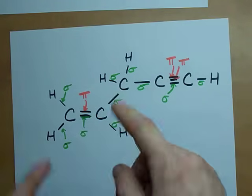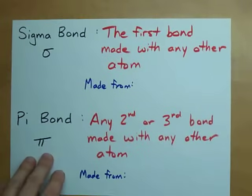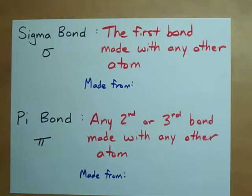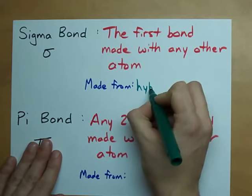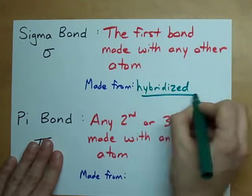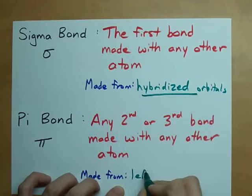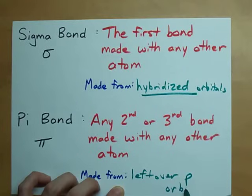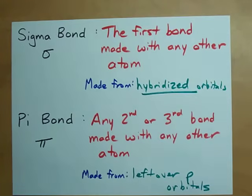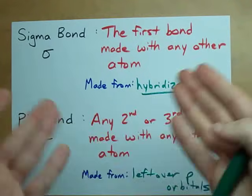So it's easy for you to tell whether it's a sigma or pi bond. But what does that even mean is the real question. Well, here's the deal when it comes down to electron configurations. Sigma bonds are always made from hybridized orbitals, whereas the pi bonds are made from leftover p orbitals.